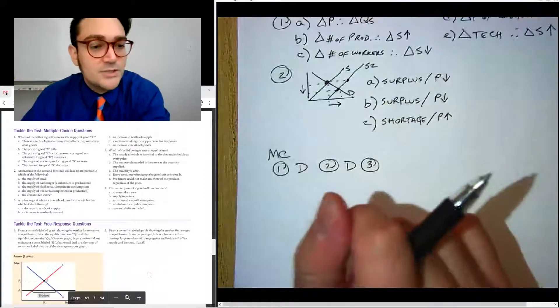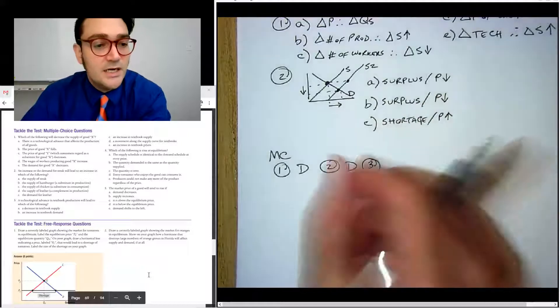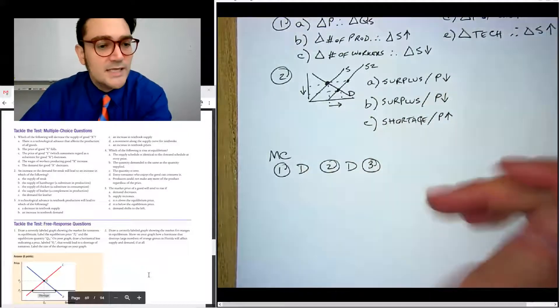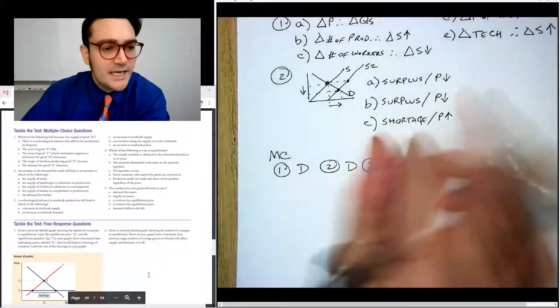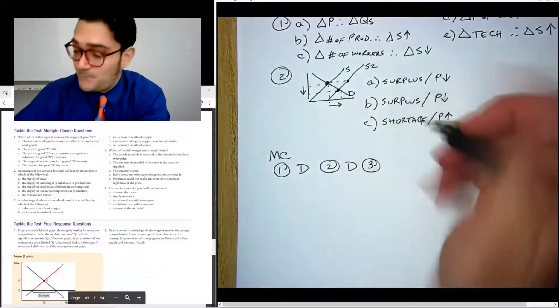Number three, a technological advance in textbook production will lead to which the following. Well, it should increase the supply. So let's look for that one, not A, not B, C. There we go.